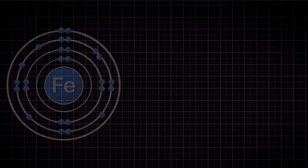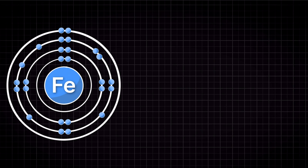Looking this up, we can see that iron is number 26 on the periodic table, meaning that in a neutral state — no positive or negative charge — our iron atom will have 26 protons in its nucleus and thus 26 electrons surrounding that nucleus.